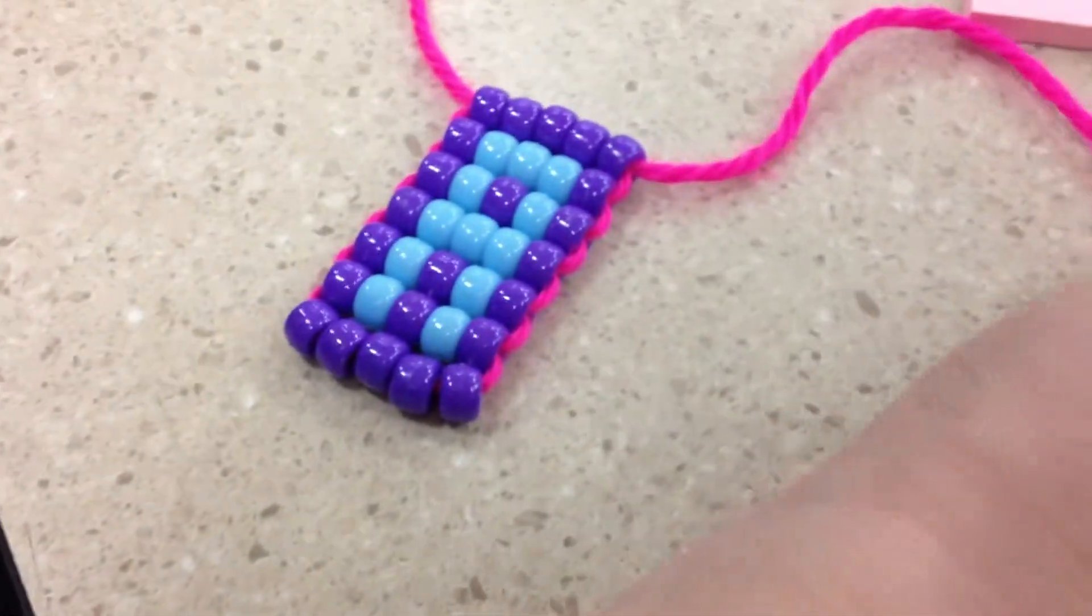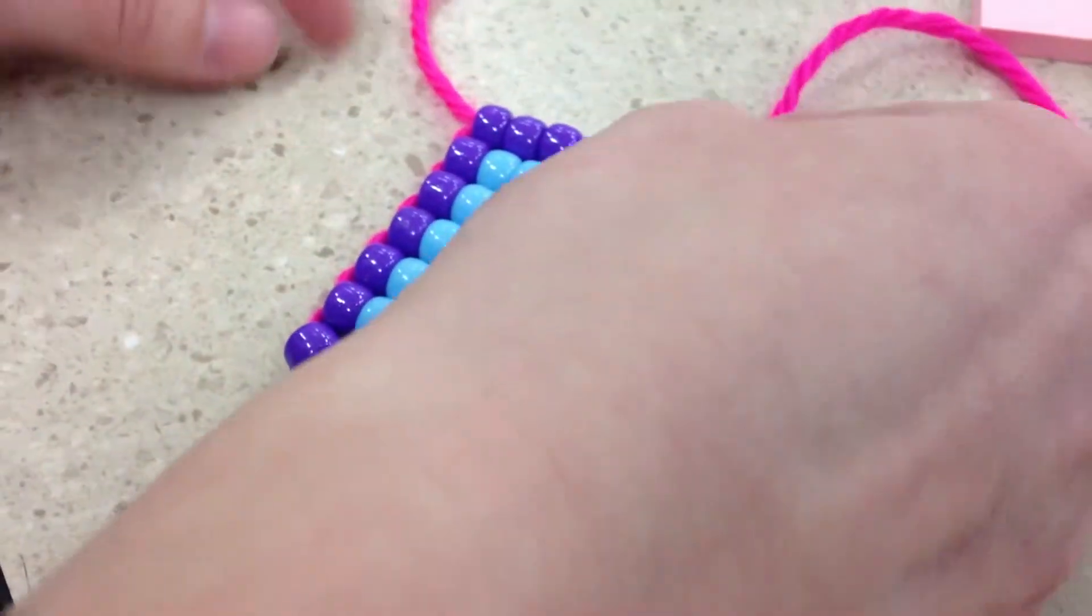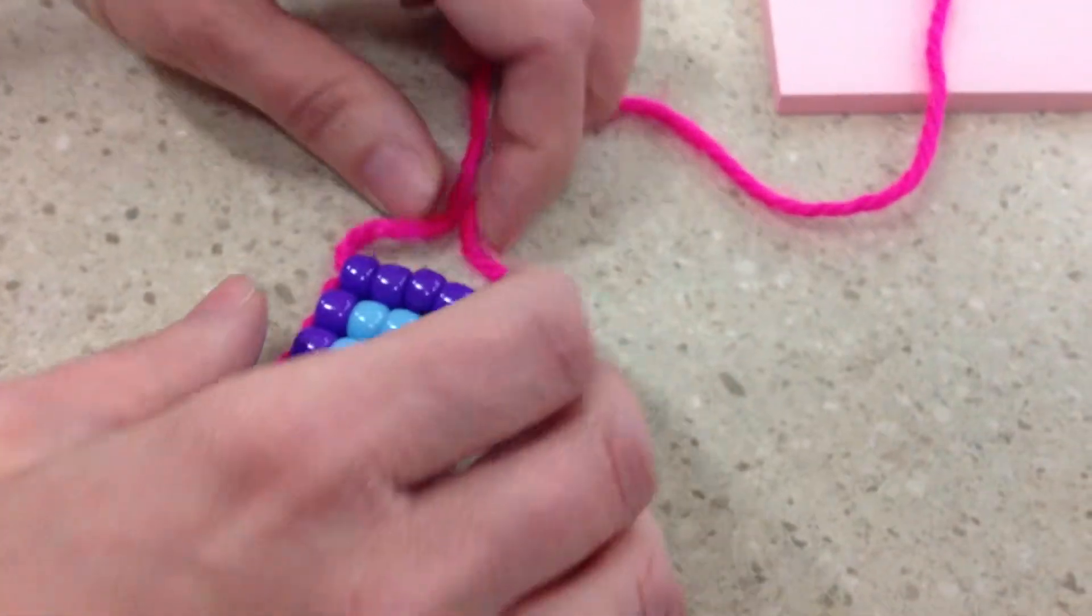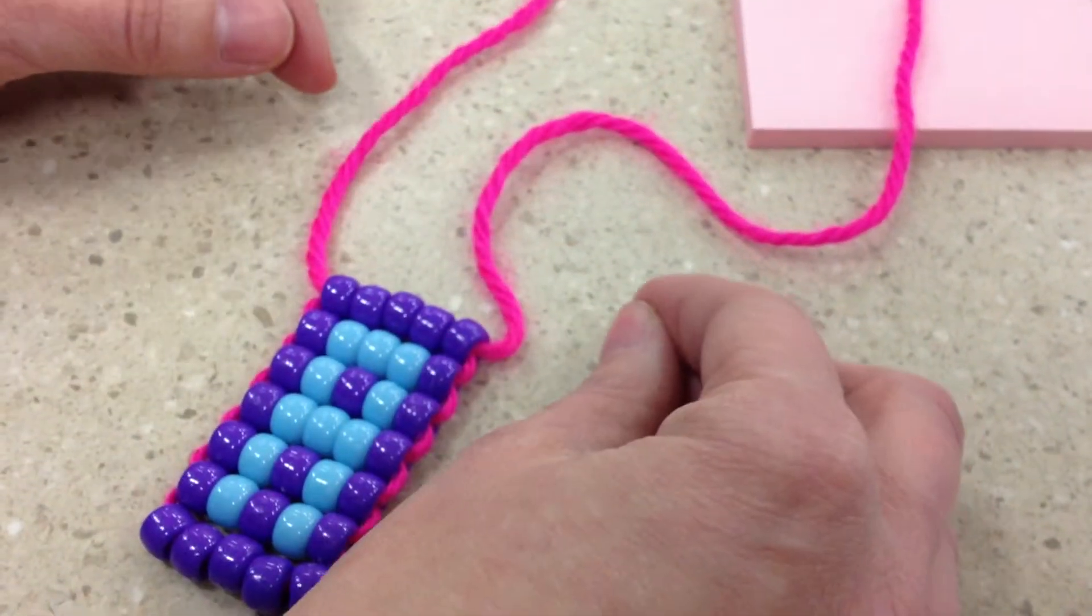When you tie this, you want to make sure that the knot is as close as it can be right here. If it's not, these will start slipping off.